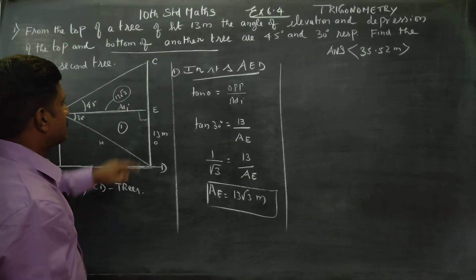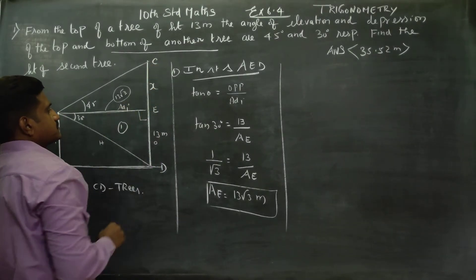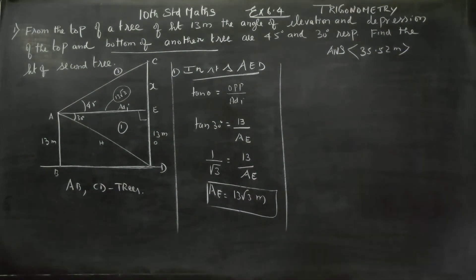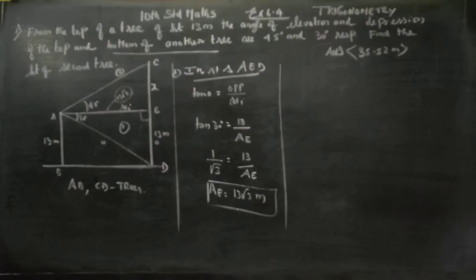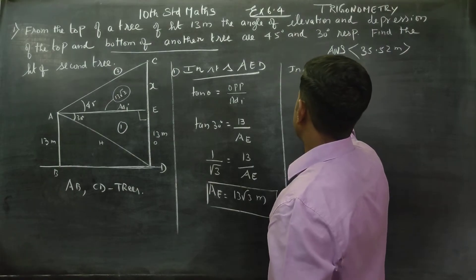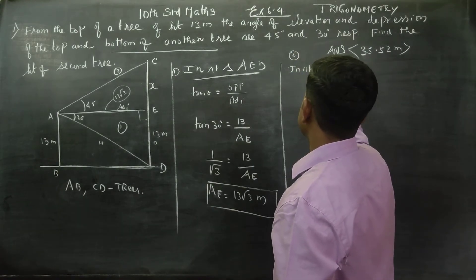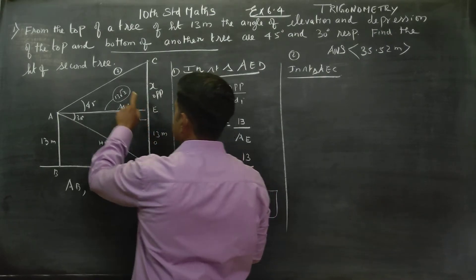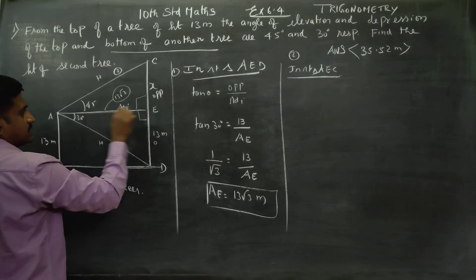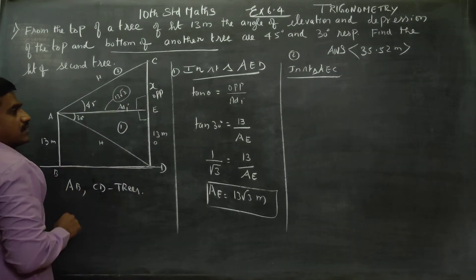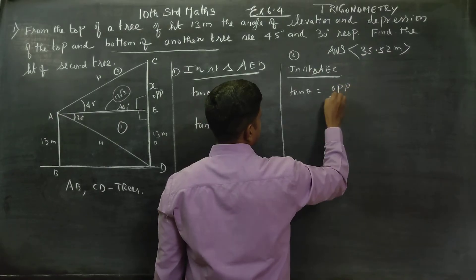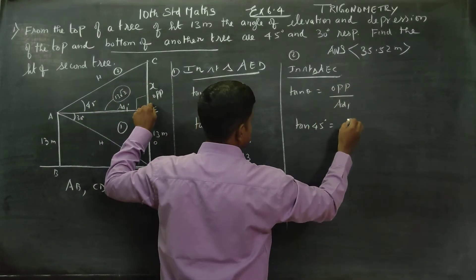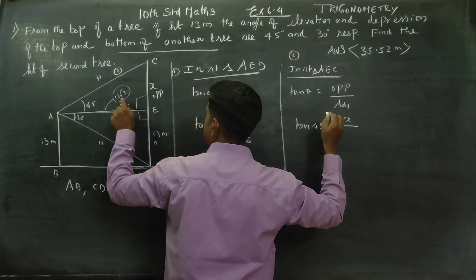Now moving upwards to the second triangle. In right triangle AED, x is the opposite side and 13√3 is the adjacent side. At this time, tan theta equals opposite side divided by adjacent side. I am going to use 45 degrees, so tan 45° = x / 13√3.